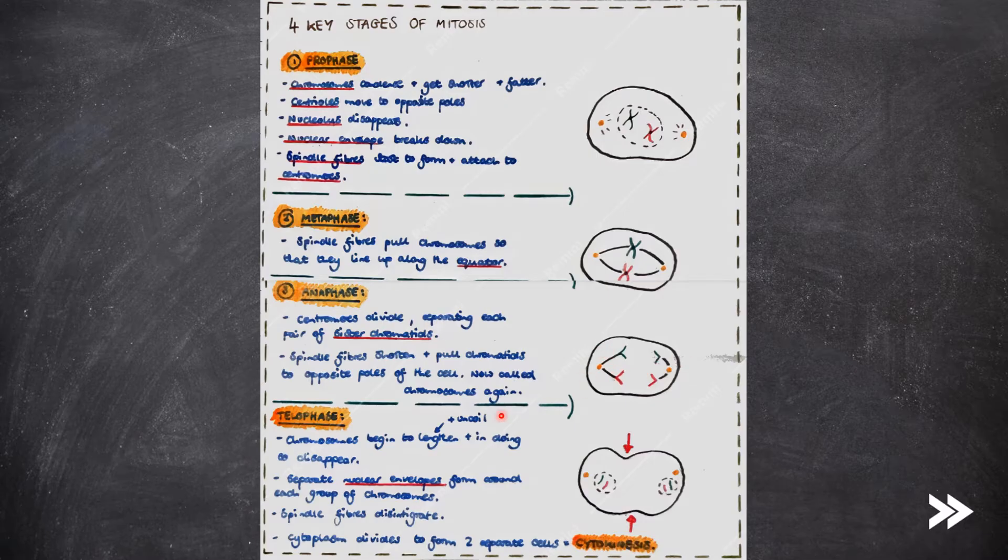Finally, we have telophase. In telophase, chromosomes begin to lengthen and uncoil and in doing so disappear. Separate nuclear envelopes form around each group of chromosomes. The spindle fibres disintegrate. The cytoplasm divides to form two separate cells, which is known as cytokinesis.